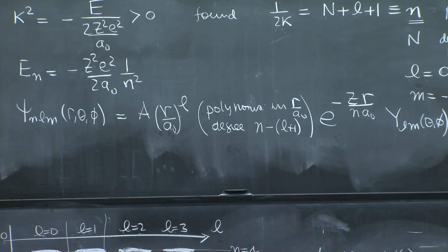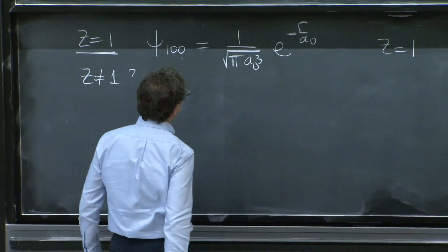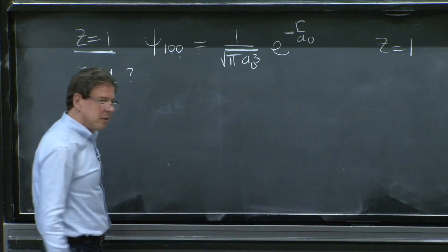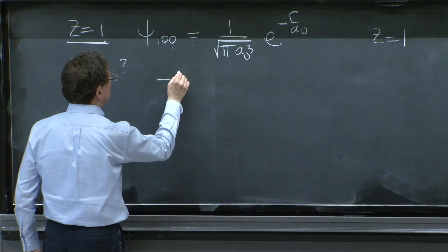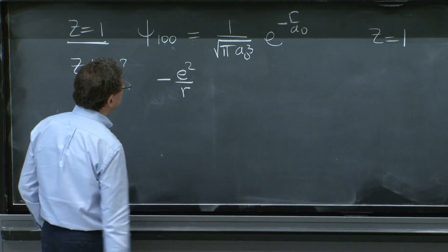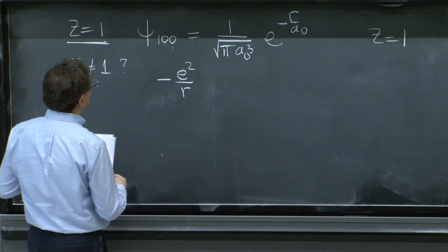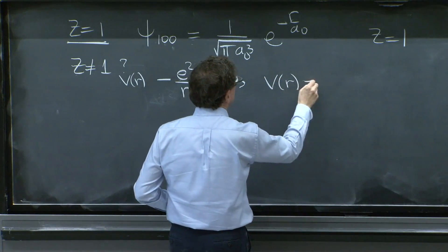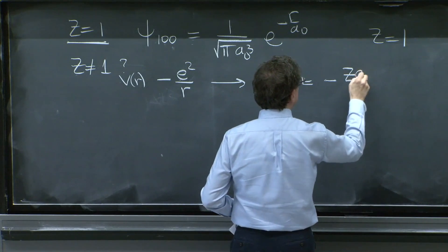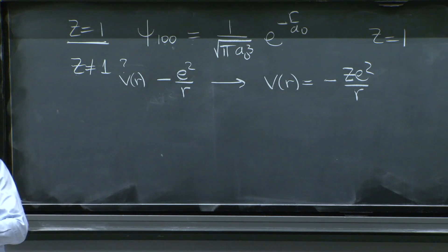So what transformation? How should I think of changing? If somebody would have told me this is the answer for z equal 1, how do I get to z different from 1? And then I think of the potential. And the potential was e squared over r. That was the potential before v of r. And it will pass to a v of r that has minus z e squared over r.